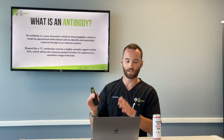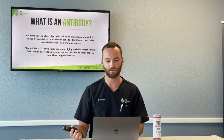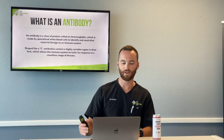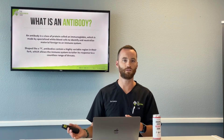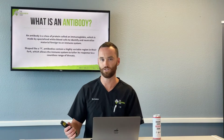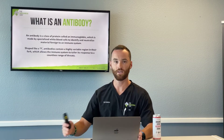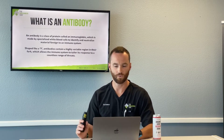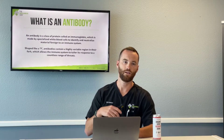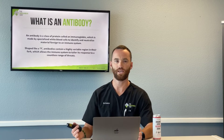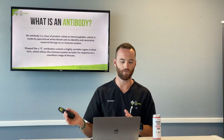An antibody is a protein called an immunoglobulin. We have four or five different types of immunoglobulins — they're specialized blood cells that identify and neutralize material that's foreign to the immune system. With autoimmune conditions, that's when we start to form antibodies against our own healthy tissue. We'll talk about Hashimoto's thyroiditis next week. Basically, an antibody identifies something that's not supposed to be in the body, binds to it, and makes it easier for our body to get rid of it.